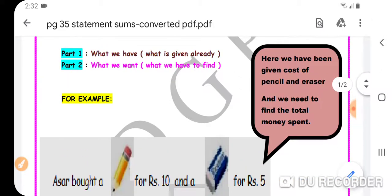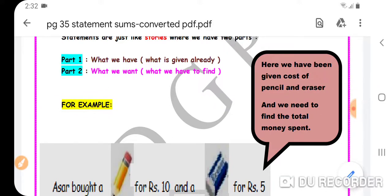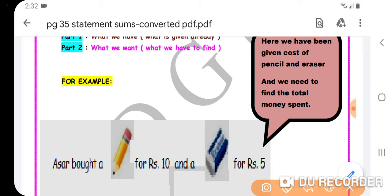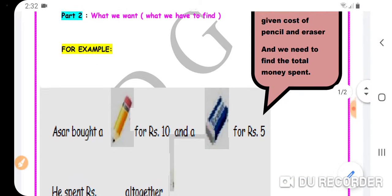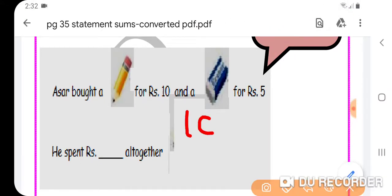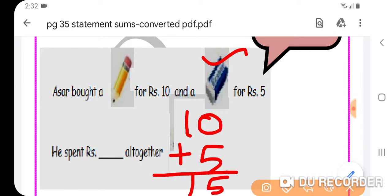Now dear Goinkans, here we have been given the cost of a pencil and an eraser and we need to find the total money spent. So what is the cost of a pencil? The cost of a pencil is rupees 10. And what is the cost of an eraser? It is rupees 5 and I will add them together. So 10 plus 5 is 15. So total money spent by Asar all together is rupees 15.